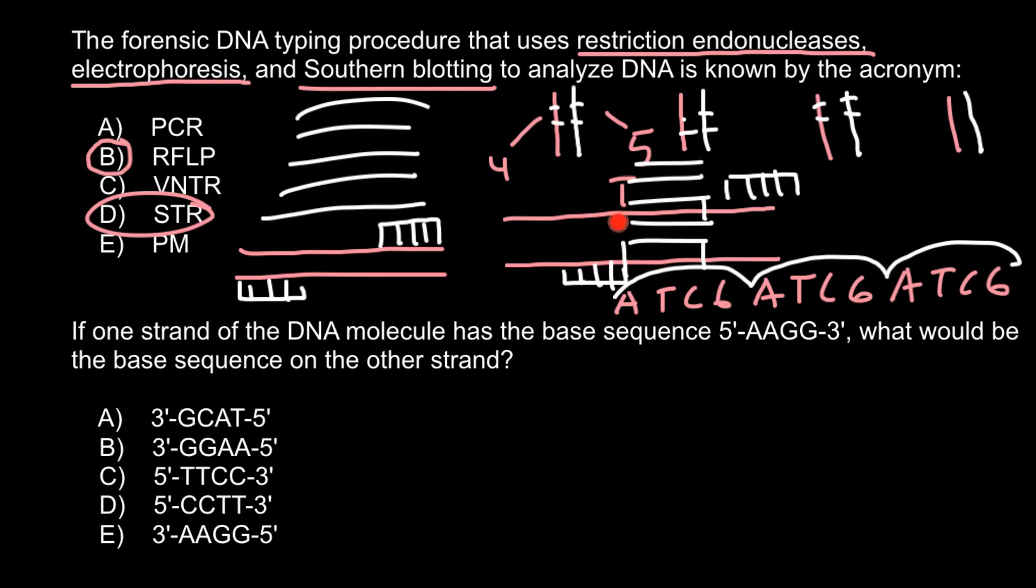In order to use this technique, we don't need restriction endonucleases because this technique is based on the principle that such fragments where variable numbers of tandem repeats are present would be flanked by DNA sequences that are stable, the same sequence in every person. We can construct primers and these primers we would use to multiply this fragment in thousands of copies. But this fragment would be of different lengths in each person. In some people we may have coincidences of the same length, but we cannot have coincidences of the same length on all certain sites or loci.